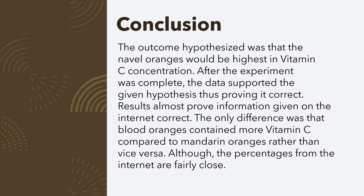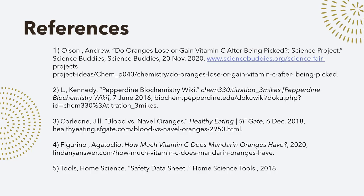Getting to my conclusion, I found that the outcome was hypothesized correctly — navel oranges were the highest in vitamin C concentration. Results almost prove the information found online correct. The only difference was that blood oranges actually contained more vitamin C than expected, although the percentages were fairly close, which is likely a matter of which oranges you got, where you got them from, and their size. Here are my citations — the websites I visited to gain the knowledge I had prior to starting this experiment, without which I would not have been able to grasp the full understanding of it.